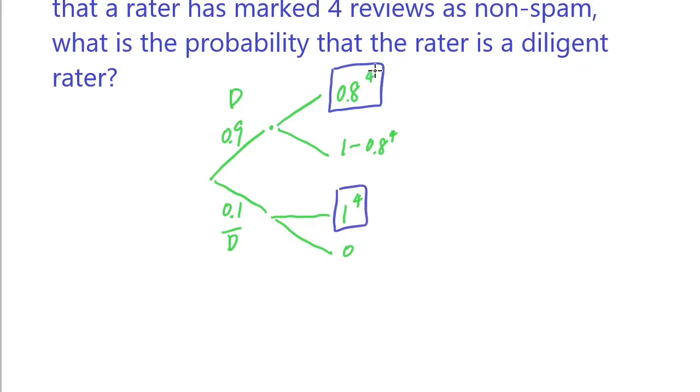That 4 non-spams are marked by this person, and we are trying to figure out what is the probability of this top case. 0.9 times 0.8 to the 4th divided by the same thing plus this probability, 1 to the 4th.